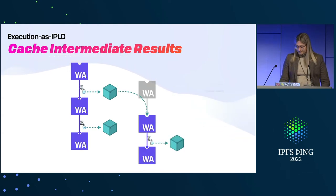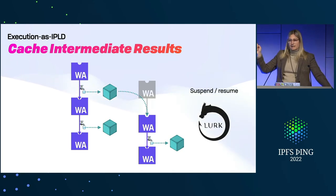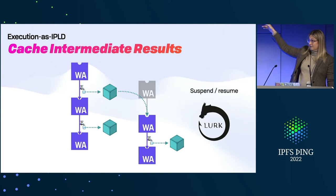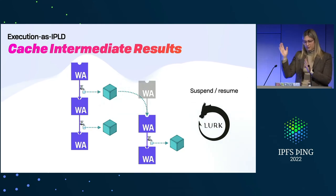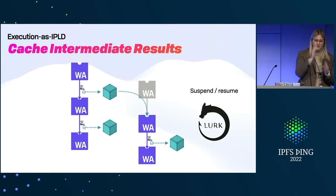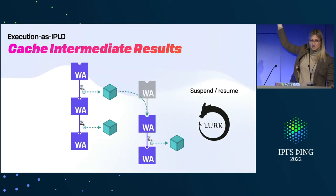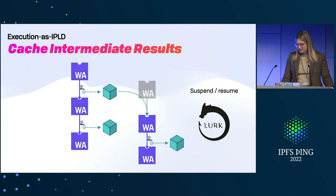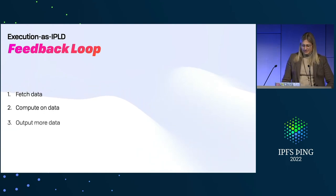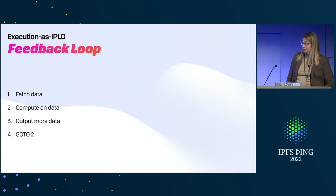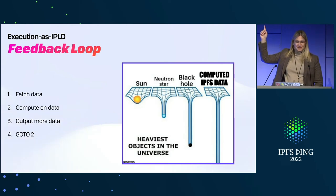This is essentially a suspend-resume mechanism, which Lurk is playing around with. For those not familiar, it's a Turing-complete SNARK system where it externalizes its running state, does the proof, and feeds that into the next step — essentially suspends, proves, and continues. This borrows the state externalization idea, basically between module calls, as a natural place to break things up. This all has a nice feedback loop: you fetch data, compute on that data, output more data, and then go back to step two — which means we end up generating a whole lot of data, and we need places to store that data, like Filecoin.